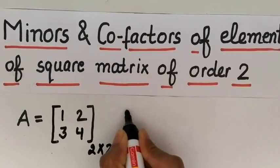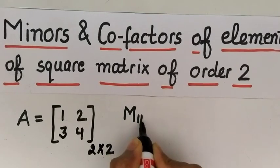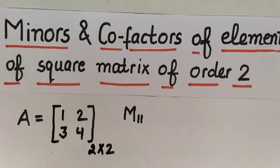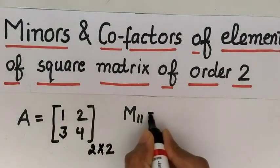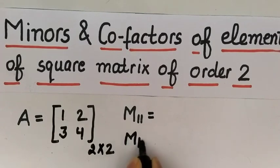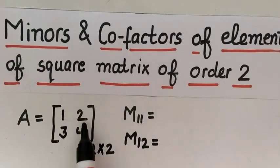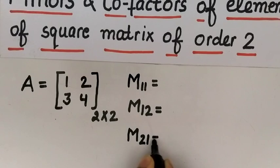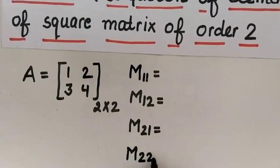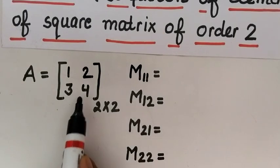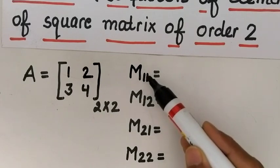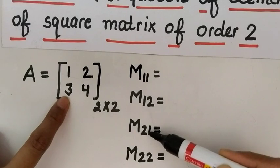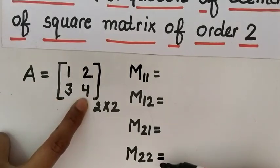I am using capital M for minors. M11 means minor of element a11, M12 means minor of element a12, M21 means minor of element a21, and M22 means minor of element a22.